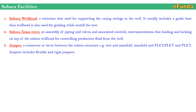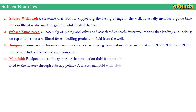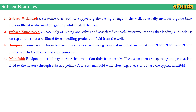Third, subsea jumper — a connector or tie-in between subsea structures, for example tree and manifold, manifold and PLET, or PLET and PLET. Jumpers include flexible and rigid types. Fourth, manifold — equipment used for gathering production fluid from the tree and wellhead, then transporting the production fluid to the floater through the subsea pipeline. A cluster manifold with various slots — slot 4, slot 6, slot 8, or slot 10 — are typical manifold arrangements.